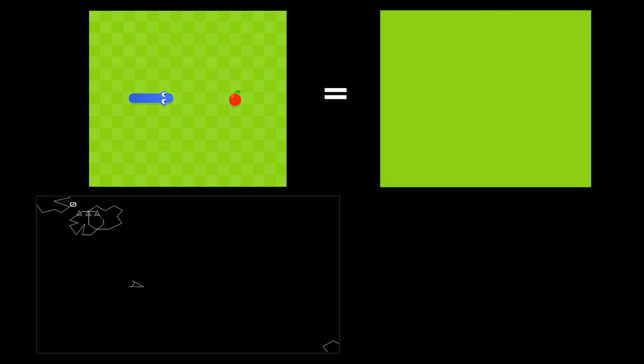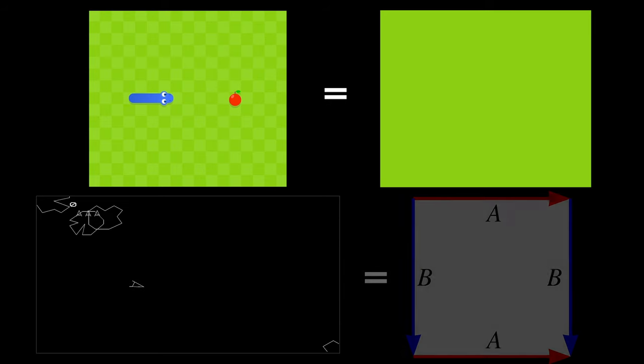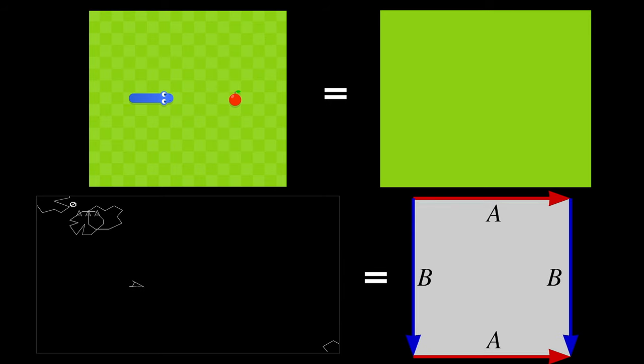So how can we mathematically differentiate between a world with boundaries and one that has this wraparound effect? For the boundaries, we can just show a normal square. But for Asteroids, we represent the universe like this. The different colored arrows are directly connected together. So if I go off the screen where the tip of this blue arrow is, I'll come back at the tip of the other blue arrow — just like in the Asteroids game. And the same goes for the red ones.